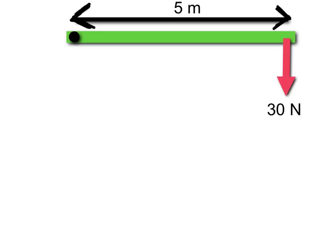This is about as simple as moments problems get. You've got a force being applied a certain distance from a pivot, and you're given the perpendicular distance from the pivot to the force. The force and the distance are perpendicular to each other, so this angle here is 90 degrees.